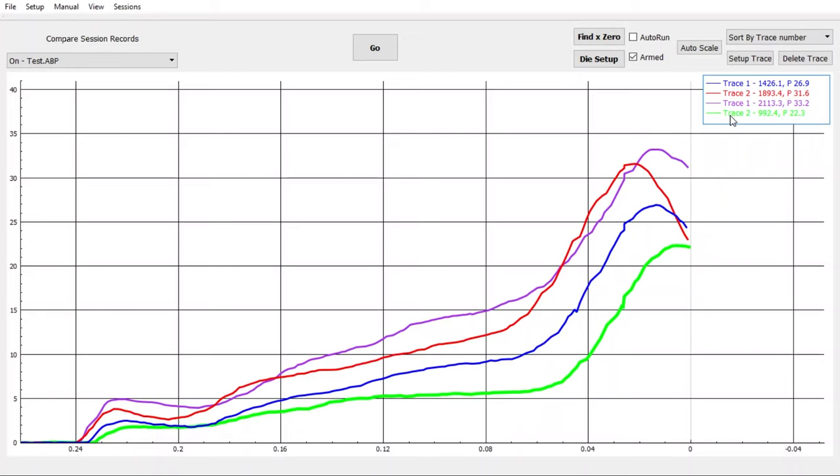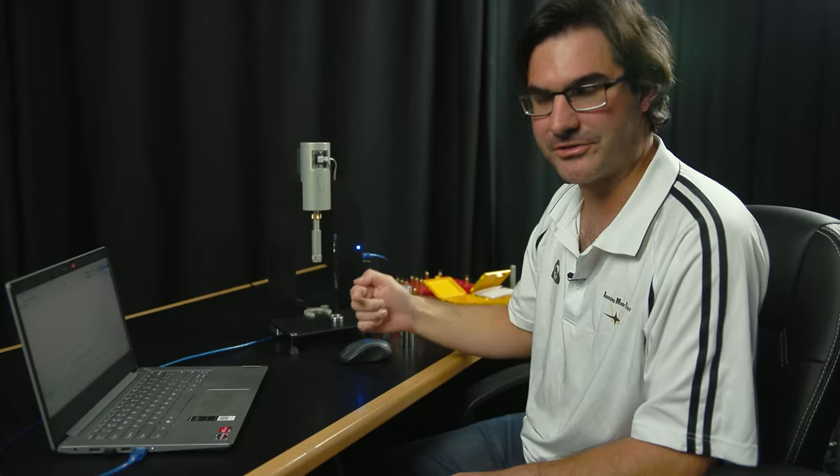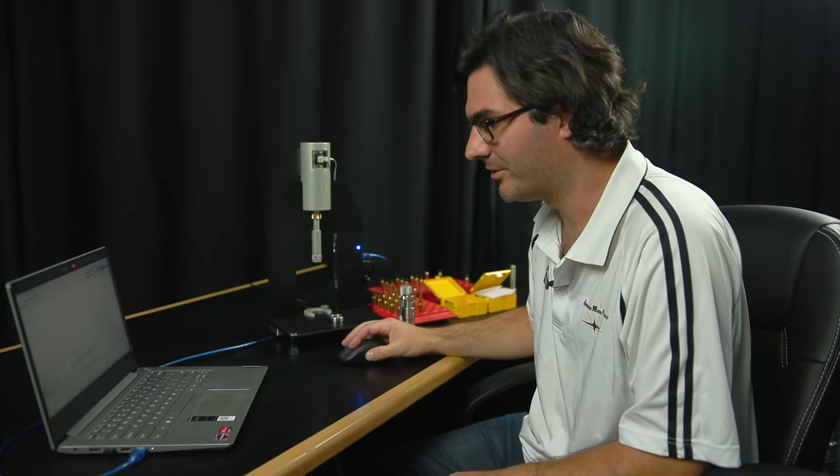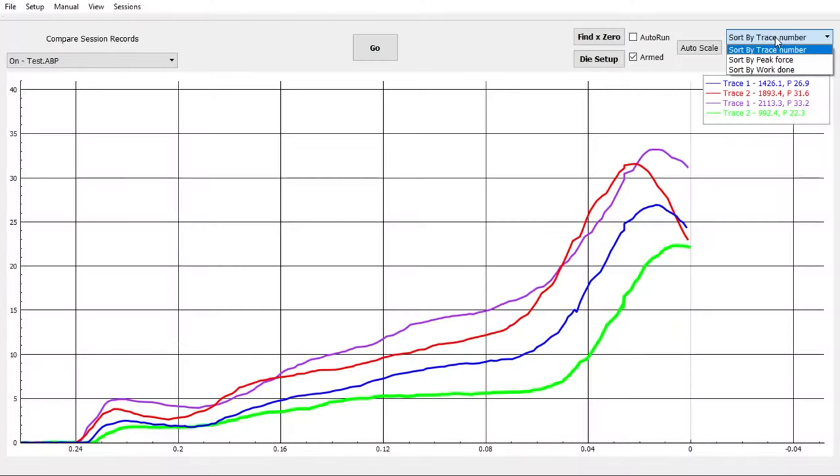Another interesting feature is Sort. At the top right-hand menu here, we've got Sort by Trace Number is Default. That'll order in the legend on the right-hand side by the number of which trace it is. So trace one, two, three, et cetera.